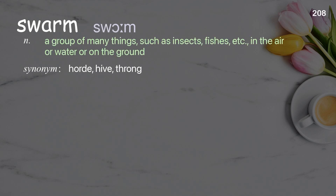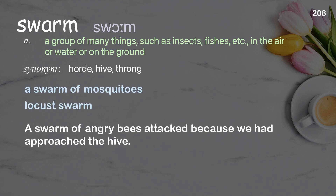Swarm: a group of many things such as insects, fishes, etc., in the air or water or on the ground. Examples: a swarm of mosquitoes; locust swarm. A swarm of angry bees attacked because we had approached the hive.